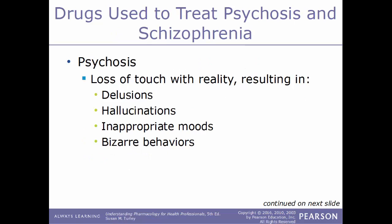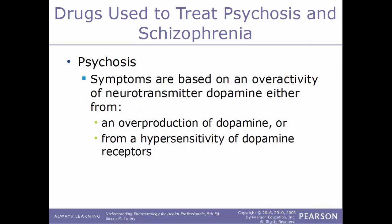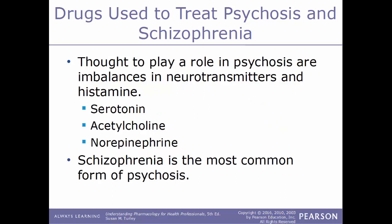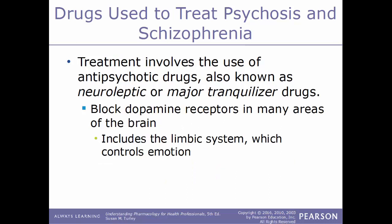Psychosis involves a loss of touch with reality, resulting in delusions, hallucinations, inappropriate moods, and bizarre behavior. Symptoms are based on overactivity of the neurotransmitter dopamine — either through overproduction or hypersensitivity of dopamine receptors — along with imbalances in neurotransmitters such as serotonin, acetylcholine, and norepinephrine. The most common type of psychosis is schizophrenia. Treatment involves antipsychotic drugs, also known as neuroleptic or major tranquilizer drugs, which act by blocking dopamine receptors in many areas of the brain including the limbic system.